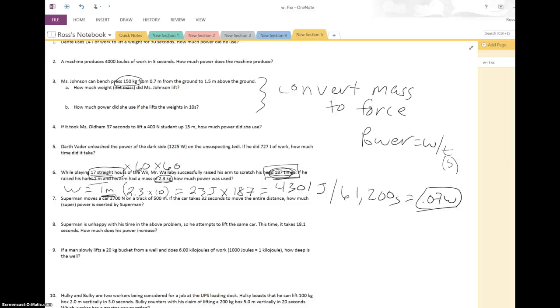So the next one we'll do is number 7. That involves Superman moving a car with 2,700 newtons of force on a track 500 meters long, taking 32 seconds to do so. So how much superpower is exerted by Superman? Very clever. So first we need to figure out work, because we don't have that yet to divide by time. So here's our force, our distance, and here's our time. So we take 2,700 times 500. That gives us work. If we divide that whole thing by 32 seconds, that will give us our power. And that comes to 42,187.5 watts.